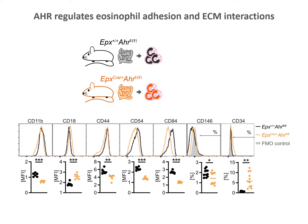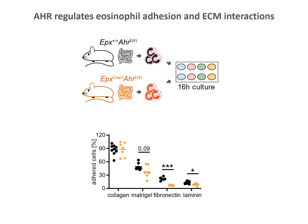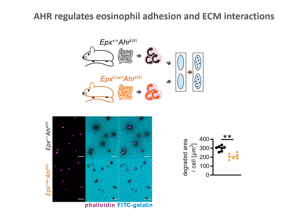We next tried to understand how AhR affects eosinophil phenotype and function. Gene set enrichment analysis suggested that AhR is important for eosinophil extracellular matrix interactions and degradation. Indeed, we found that AhR-deficient eosinophils expressed lower levels of cell adhesion molecules, were less able to adhere to certain extracellular matrix components, and when cultured on a fluorescent gelatin matrix, were less able to degrade the substrate.